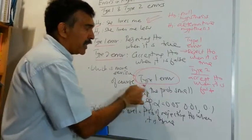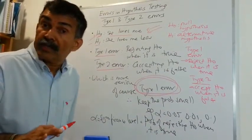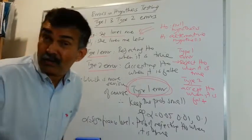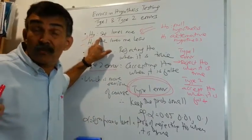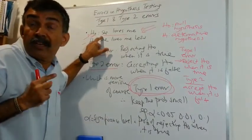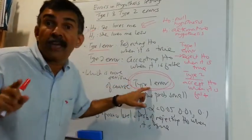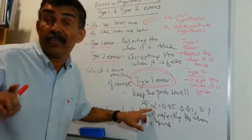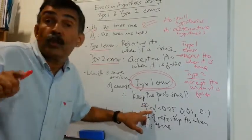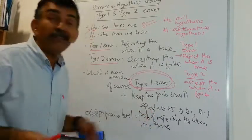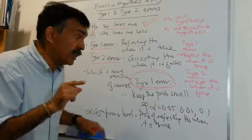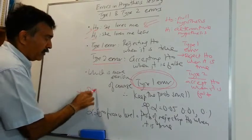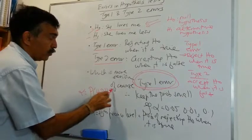That is why we keep the probability of a Type 1 error small. I'll repeat. We have to keep the probability of a Type 1 error small because we don't want to reject H0 when it is true. She loves me. We have been together for so many years. We don't want to reject it when it's true. So we want to keep the probability of a Type 1 error small.